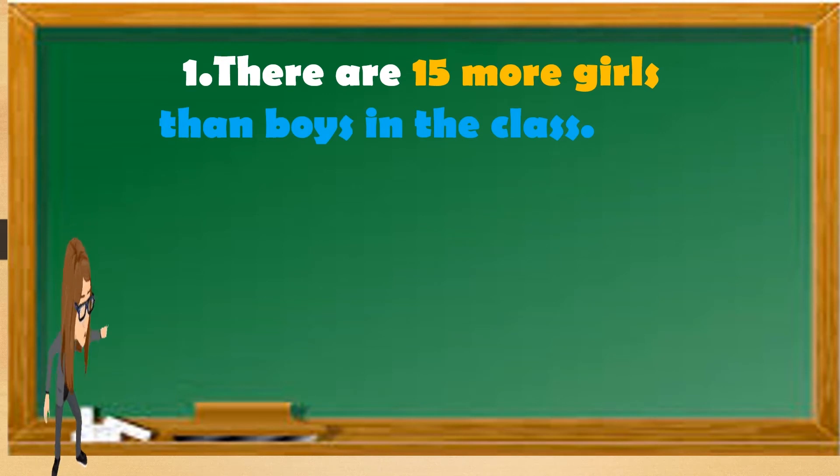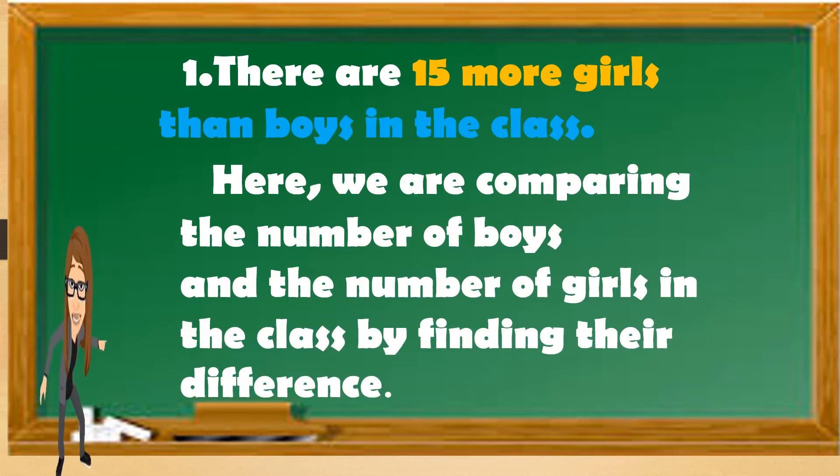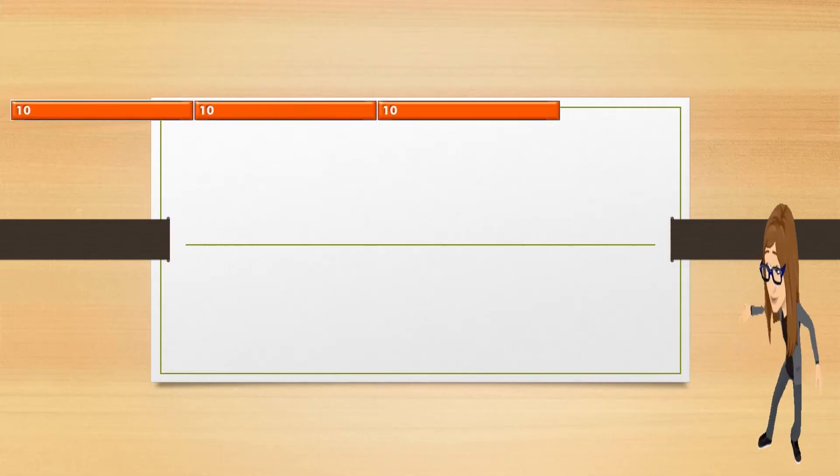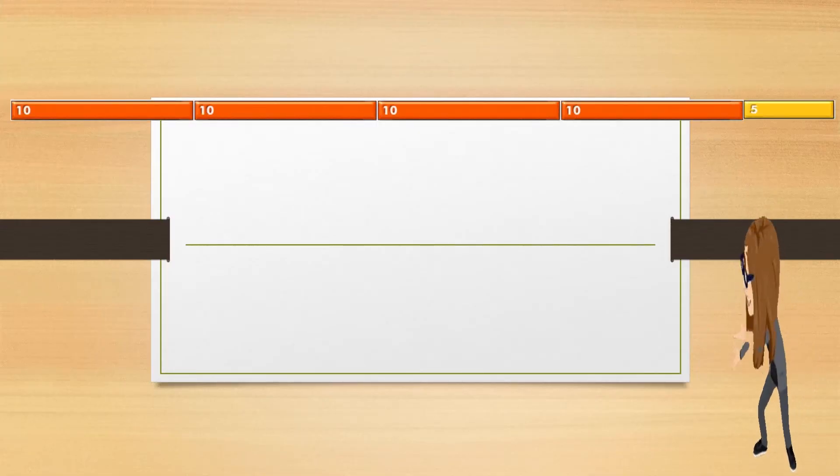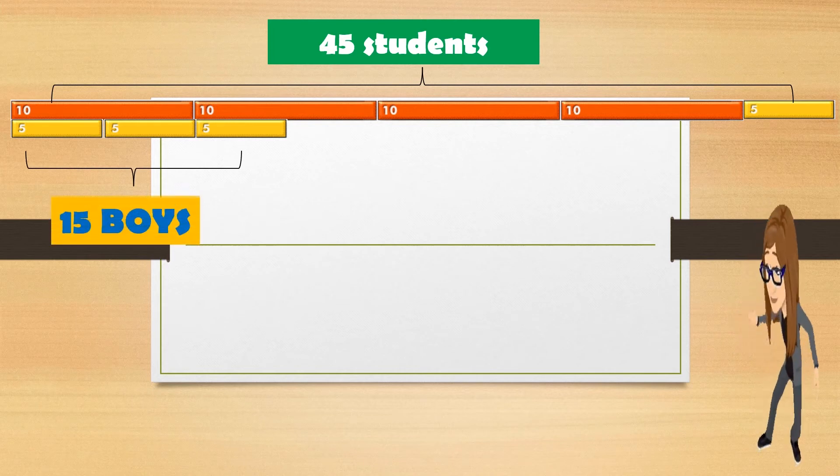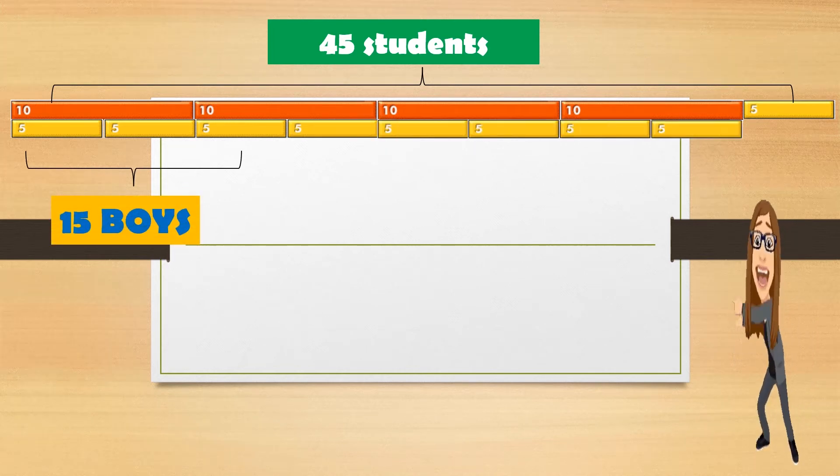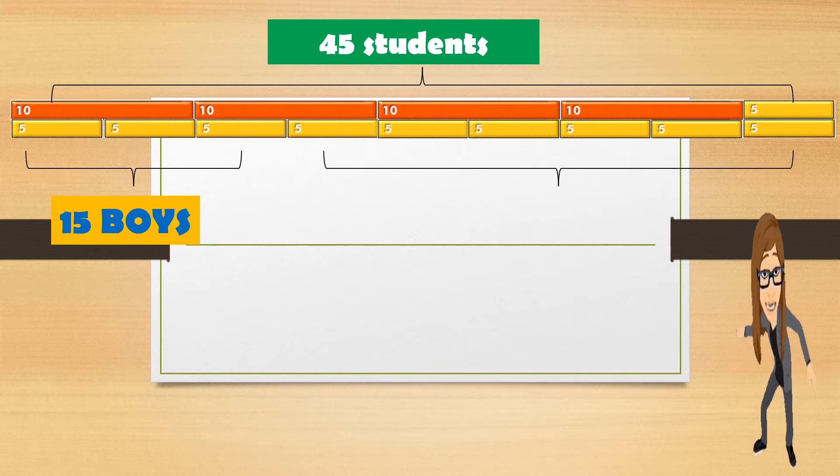First: there are 15 more girls than boys in the class. Here we are comparing the number of boys and the number of girls by finding their difference. So, 45 students, 15 boys, and how many girls? 30 girls.